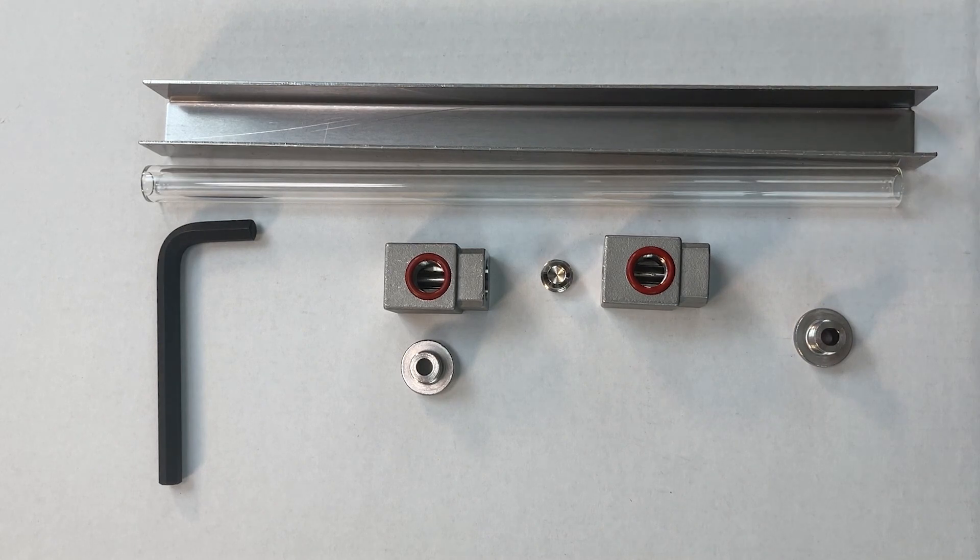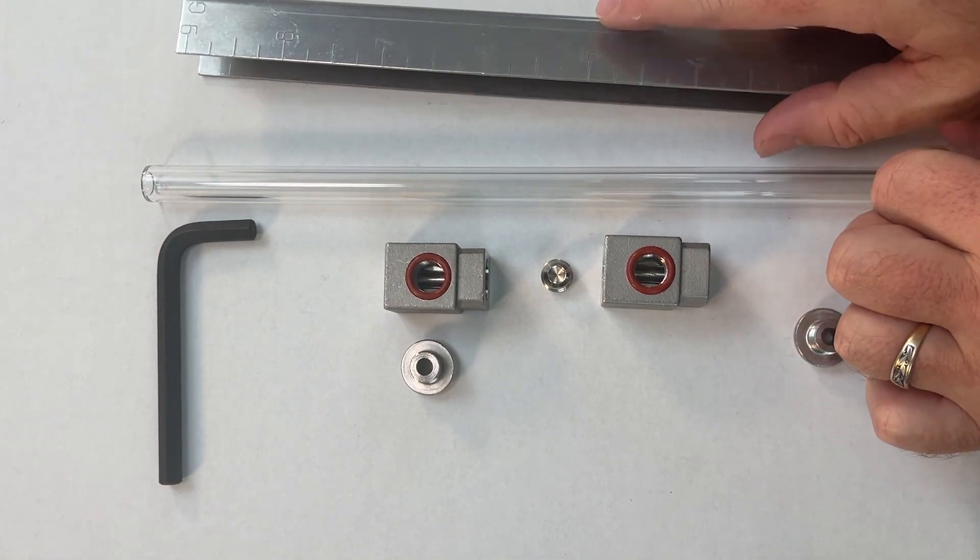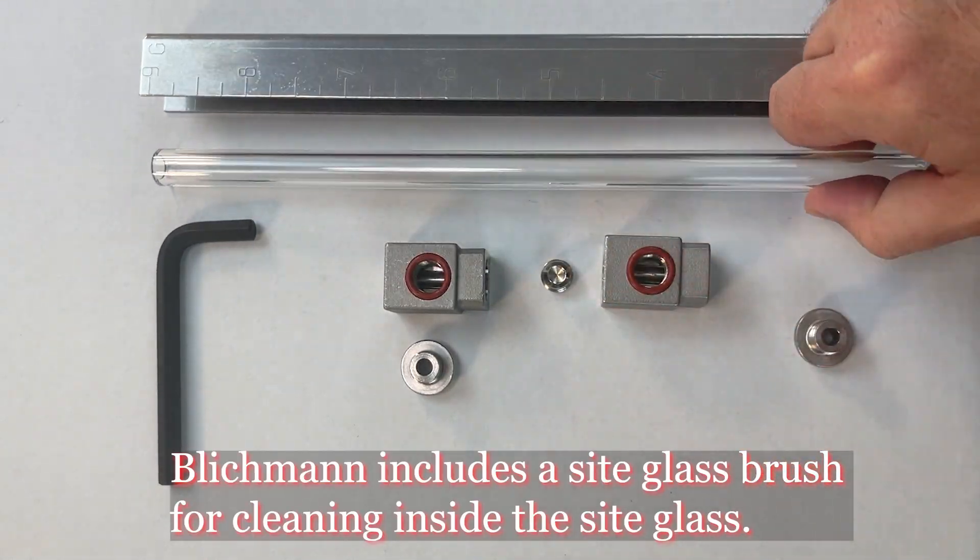So I just basically took PBW and Blickman recommends a barkeeper's friend, but either one will work well to get it out of there and clean it up. Everything else was pretty clean, but just to be aware so it doesn't get on something else. Your sight glass is glass. So be very careful with that.